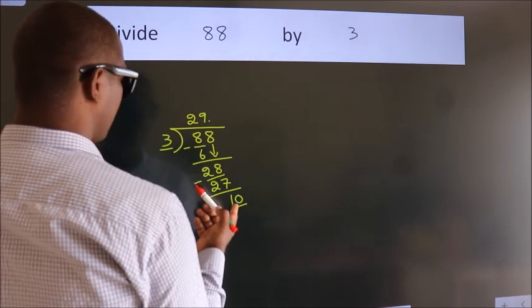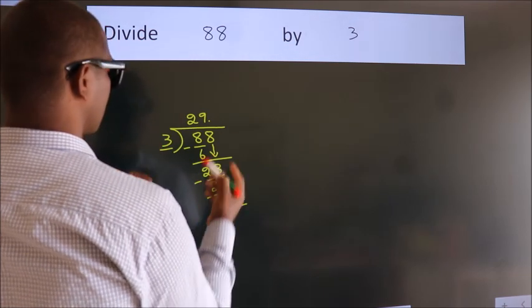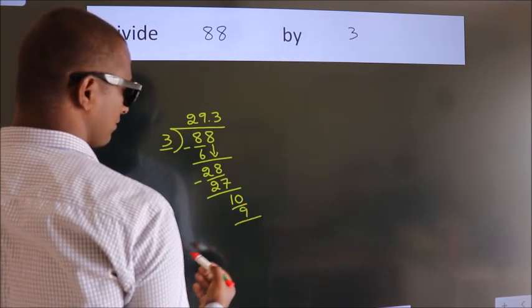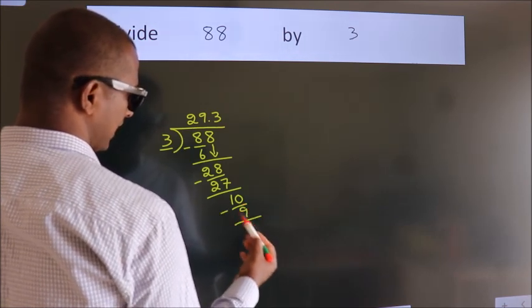A number close to 10 in the 3 table is 3 times 3 which is 9. We subtract. We get 1.